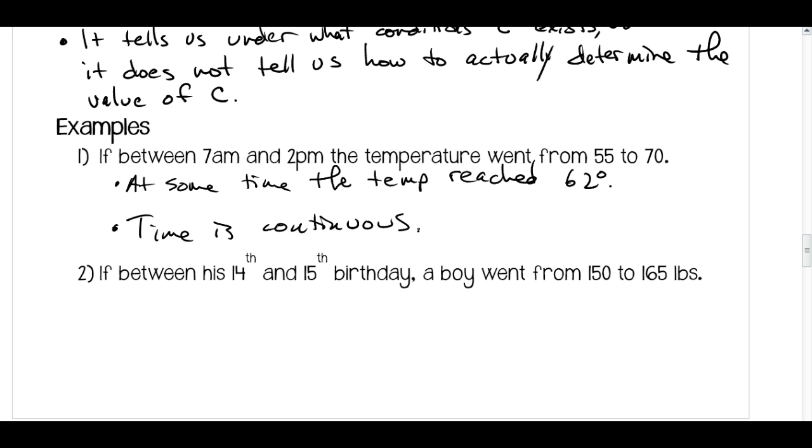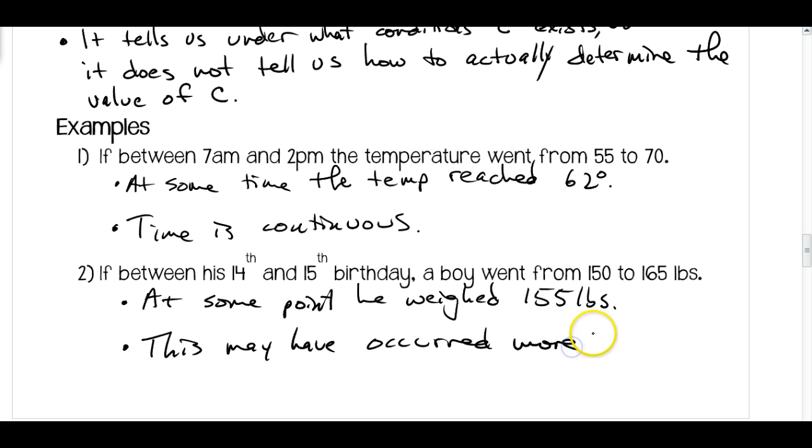Another example. If between his 14th and 15th birthday, a boy went from 150 to 165 pounds, some conclusions we could make based on the Intermediate Value Theorem. At some point, he weighed, say, 155 pounds. Once again, that's just an arbitrary weight in between 150 and 165. And this may have occurred more than once. So just a couple of real-world type examples there.